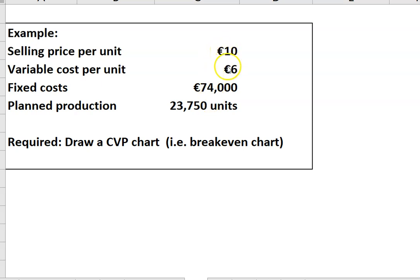Selling price per unit, variable cost per unit, fixed costs, and planned production. From that, we can construct a chart. So let's go and do it.